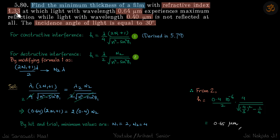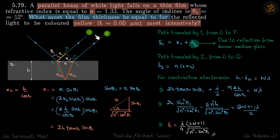Find the minimum thickness of a film with refractive index 1.33 when light with wavelength 0.60 μm experiences maximum reflection and wavelength 0.40 μm is not reflected at all. The incidence angle is equal to 30 degrees.